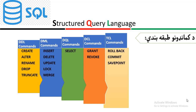DCL, Data Control Language commands include grant and revoke, which are privileges used to work with a database table. For example, if you want to grant or revoke access for a user, you use these commands.